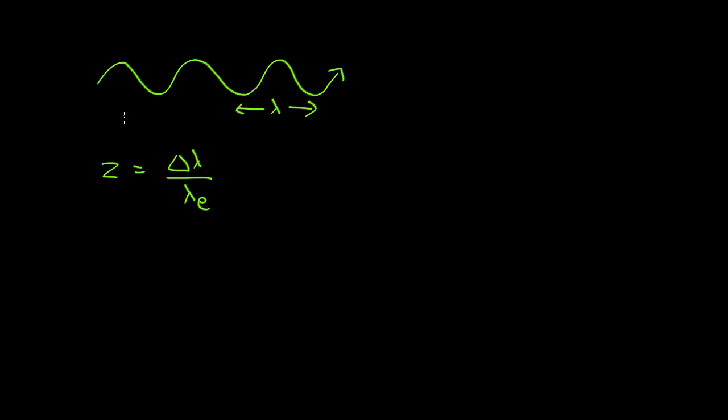Well, as the universe expands, it's going to stretch the photon. It's going to pull the front and back further apart from each other because they're not bound to each other. So the wavelength of a photon at some time t is going to be equal to the wavelength now times a of t.